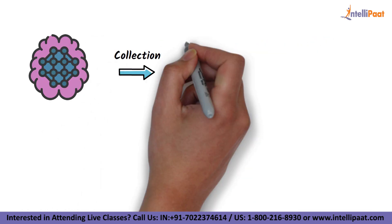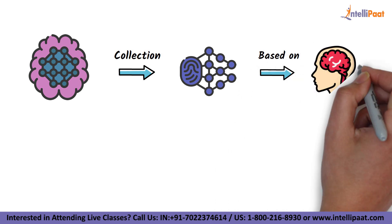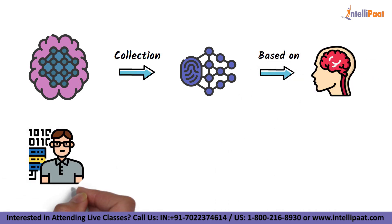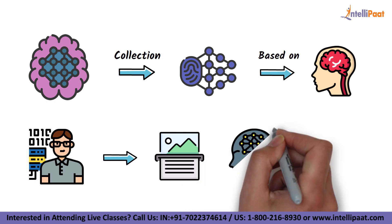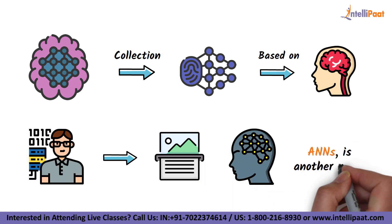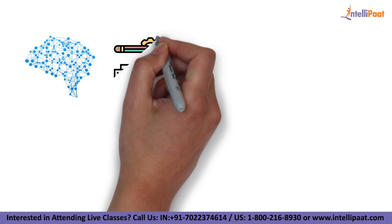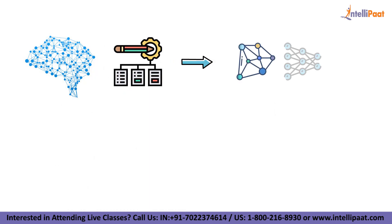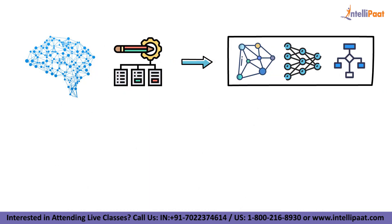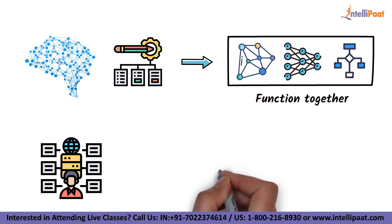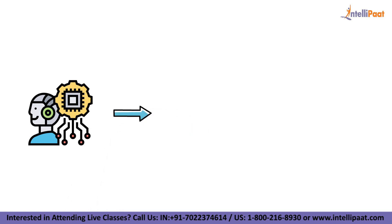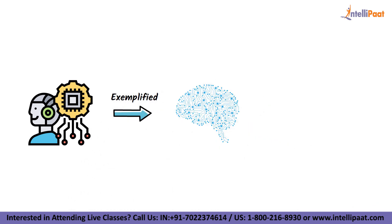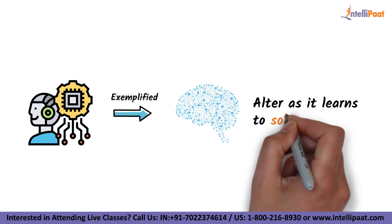So what is a neural network? Neural networks are a collection of algorithms that are based on the human brain. They were created by computer scientists to recognize patterns. Artificial neural networks, or ANNs, is another name for them. Neural networks are frameworks for many different machine learning algorithms that function together, rather than methods themselves. Complex data is processed by the algorithms.